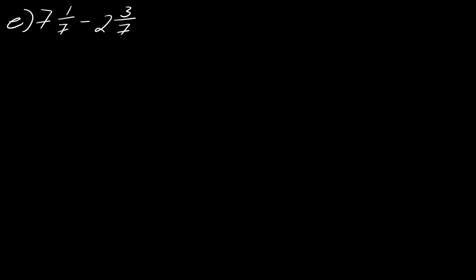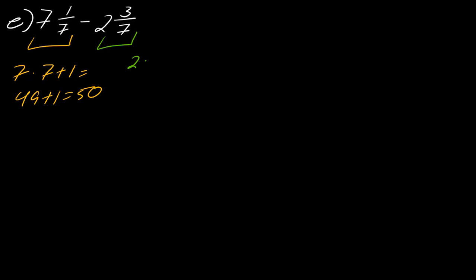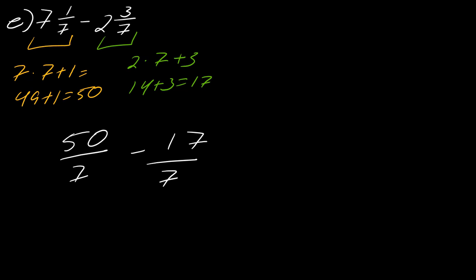For the last one, I've got two mixed numbers. For the first: seven times seven plus one gives 49 plus one, which equals 50. For the other: two times seven plus three gives 14 plus three, which equals 17. So I can rewrite this as 50 over seven minus 17 over seven, which equals 33 over seven. That brings us to the end of this set of exercises.